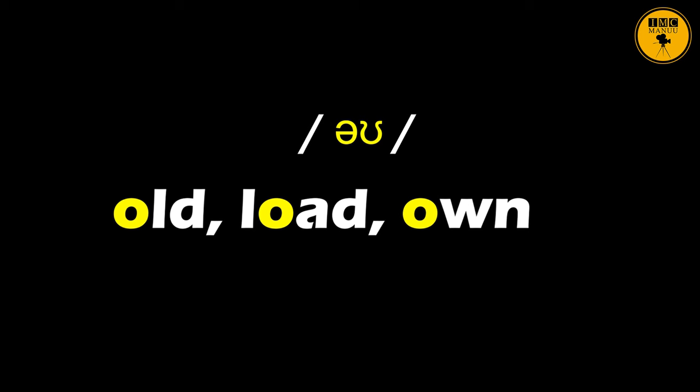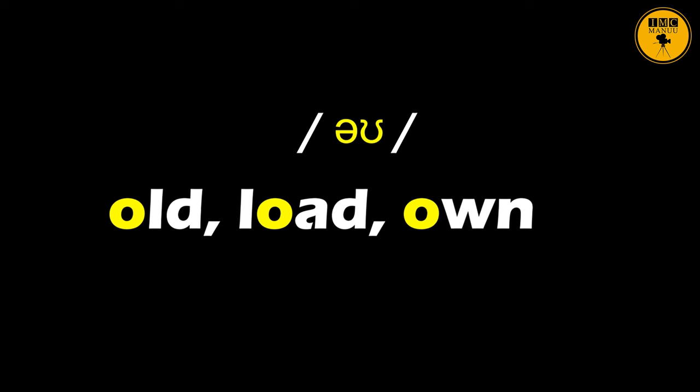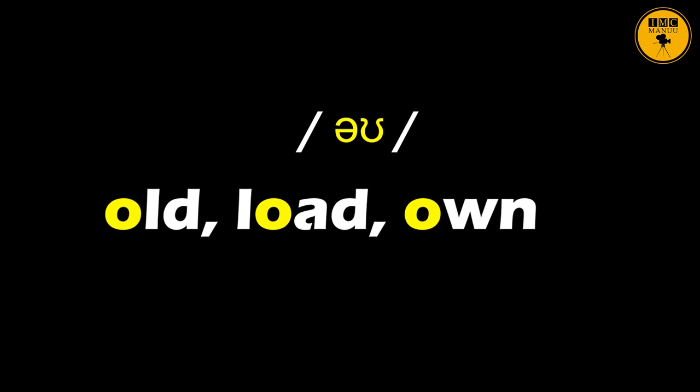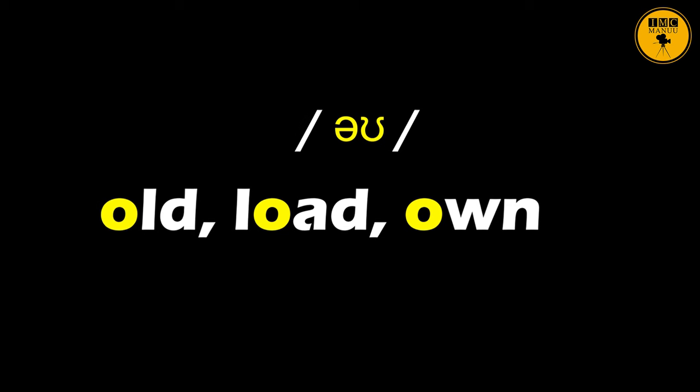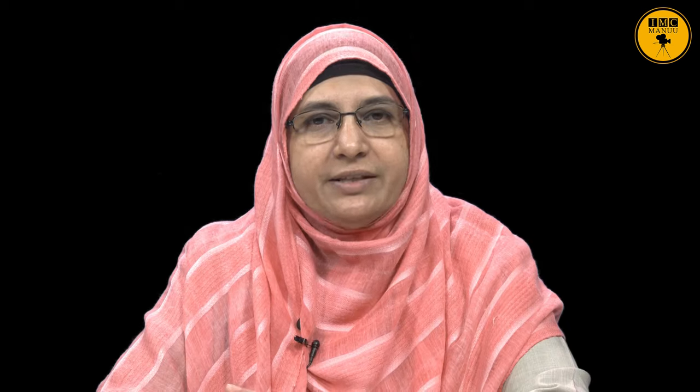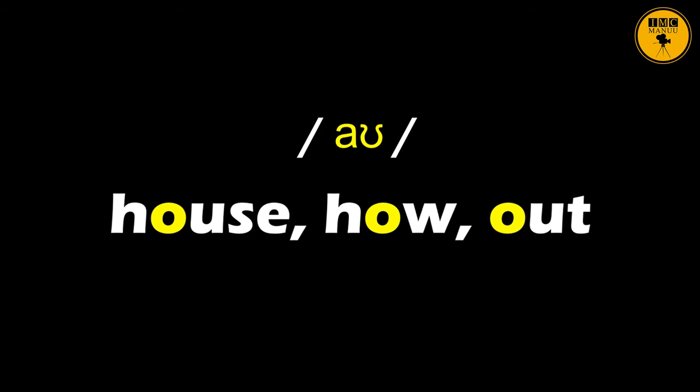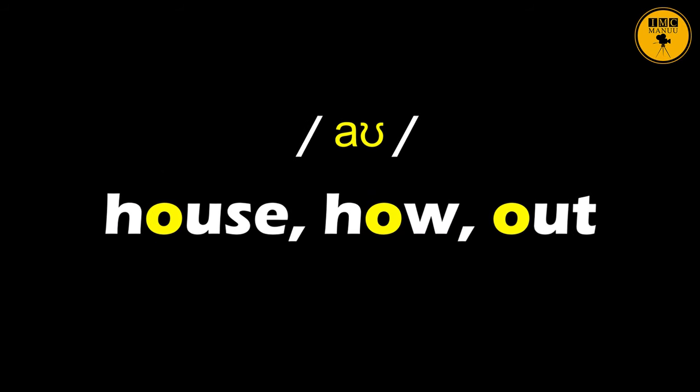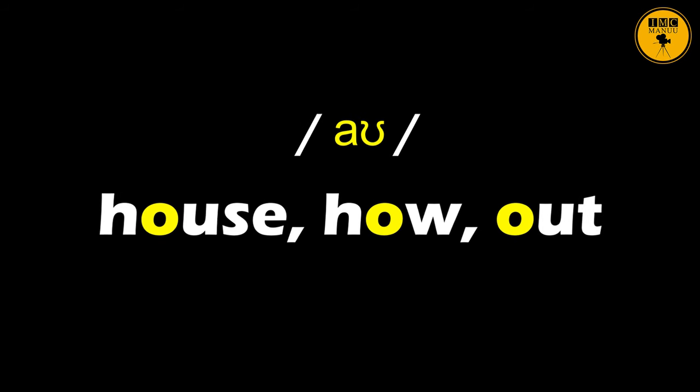Now we look at diphthongs that close at the back. Two sets of examples — as I utter these words you will find the symbol reflected on your screens. Old, load, own. Please repeat: old, load, own. The second set: house, how, out. Please repeat: house, how, out.